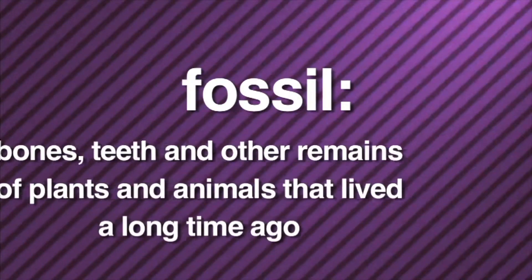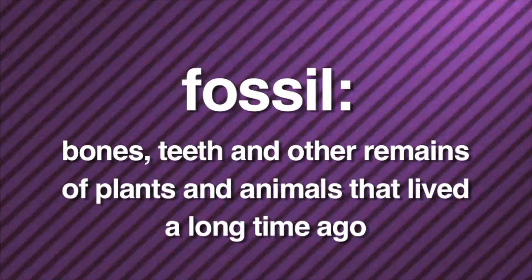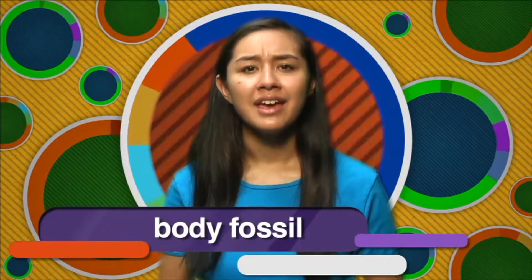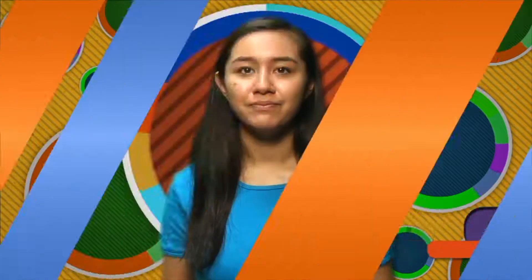Fossils are the bones, teeth, and other remains of plants and animals that lived a long time ago. There are different kinds of fossils. The first type of fossil we're going to learn about is called a body fossil. How do body fossils form?